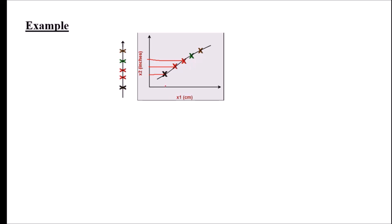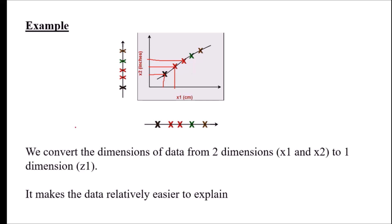So we can either project the data on the x2 axis or on the x1 axis, converting two-dimensional data into one dimension. It is very easy to understand when there are only two dimensions. But if we increase the number of dimensions — suppose there are 100 dimensions — it is very difficult to imagine. So the important concept is that we have to convert high-dimensional data into low-dimensional data so that it will be easy for further processing.